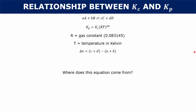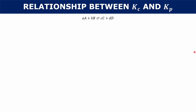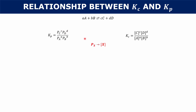So it's one thing to know the equation, and it's another thing to know where this equation comes from. What is the derivation of this equation? That's what we're going to be spending the rest of the video talking about. We have our same equation, and since we're talking about gases, one thing that we can use is our ideal gas law, which tells you that PV equals nRT.